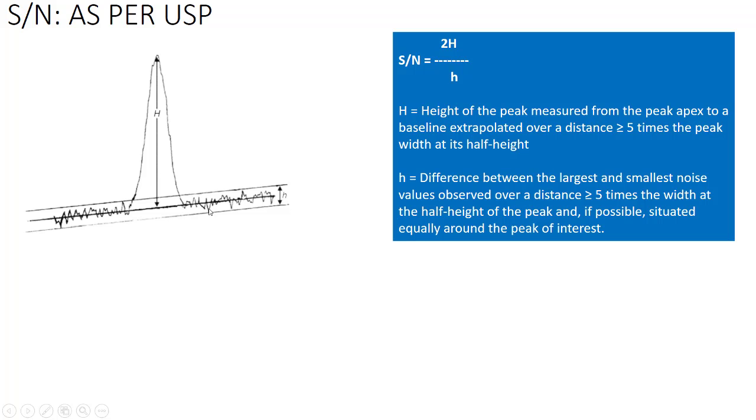This is the signal and this is the baseline having some kind of noise. The calculation formula given by USP is signal-to-noise ratio equals 2H divided by small h. What is the meaning of capital H? It is the height of the peak measured from the peak apex to a baseline extrapolated over a distance greater than or equal to 5 times the peak width at its half height.